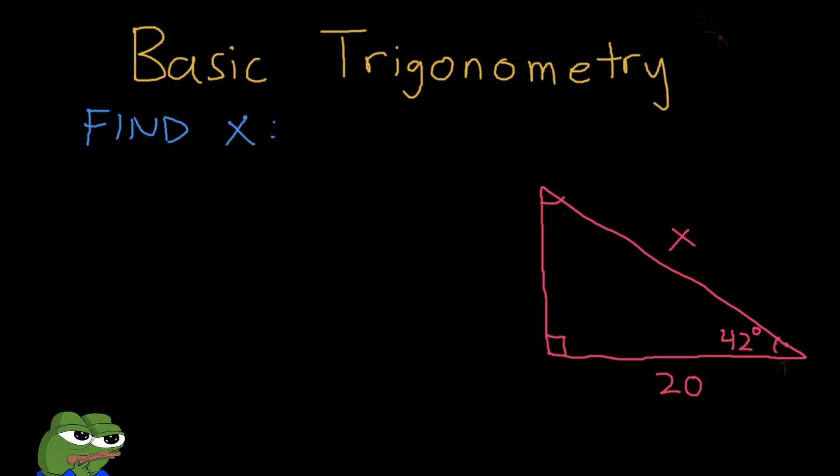Here we are given an angle of 42 degrees, and we see that its adjacent side is 20, and the hypotenuse is what we're trying to find. So given that we have the adjacent and we're trying to find hypotenuse, what trigonometric function do you think we can use?